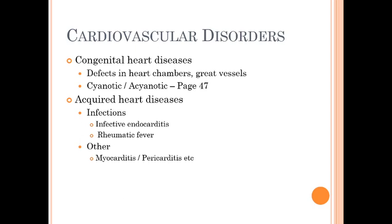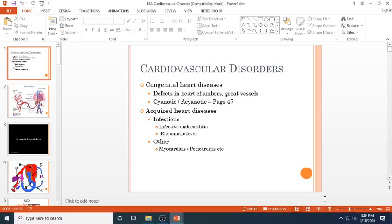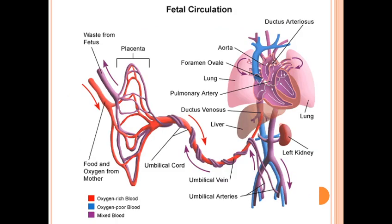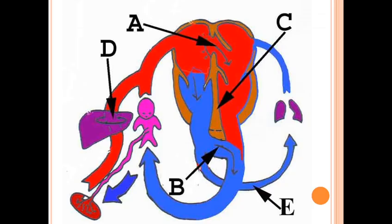Acquired heart diseases can result from infections — such as infective endocarditis or rheumatic fever — or other causes like myocarditis and pericarditis. A diagram of fetal circulation shows the placenta situated inside the uterus, connected through the umbilical cord to the mother's circulatory system and heart. Acyanotic heart defects do not cause cyanosis.